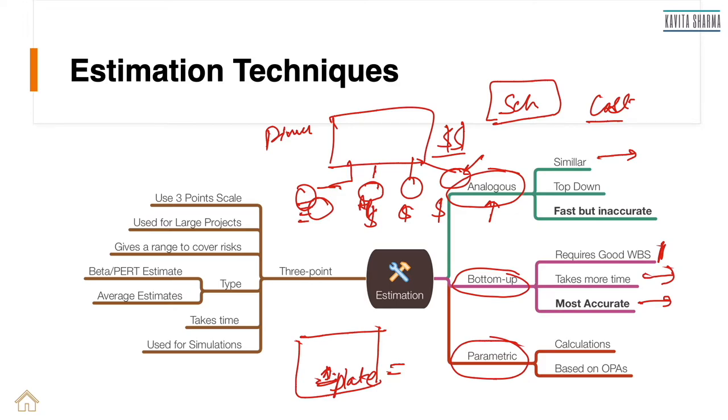And the restaurant owner gonna give you a per person cost, he probably would say $40 or $100 per person, inclusive of XYZ menu. Because he's been there in this business for a long time, there are a lot of historical data with him. And with this historical data, you can come up with per person cost.